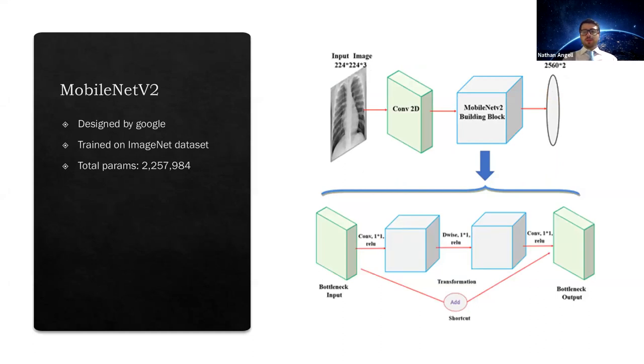MobileNet V2 is a transfer learning model that I chose for my dataset. Now, there are many different transfer learning models that I could have chose, but I thought that this was the best fit for me. This specific model was designed by Google and is trained on this very large ImageNet dataset. This dataset contains around 1.2 million training images, 50,000 validation images, and 100,000 test images. Because of the vast dataset that it was trained on, it has a total parameters of 2,257,984 parameters, meaning that it's a very deep model that has a lot of learning attached to it.